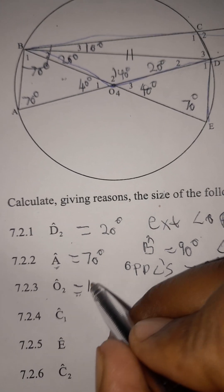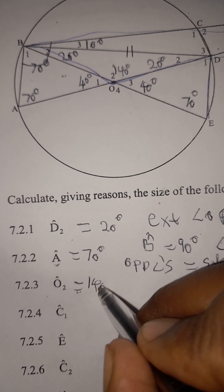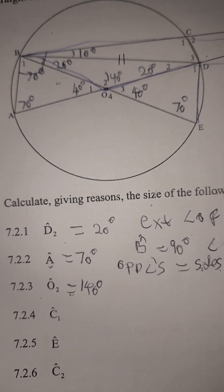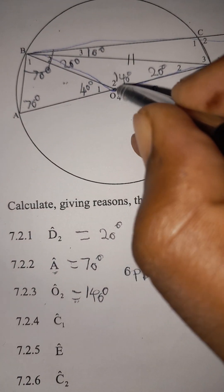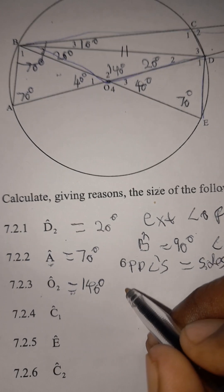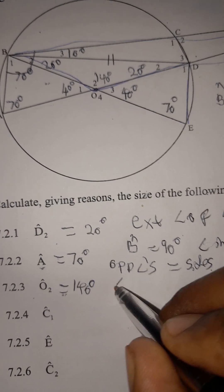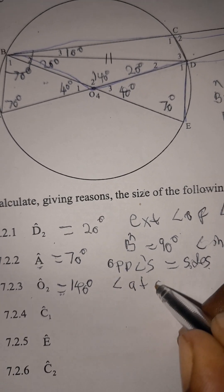To find angle O2, we get 140 degrees. The reason is angle at the center is twice the angle at the circumference.